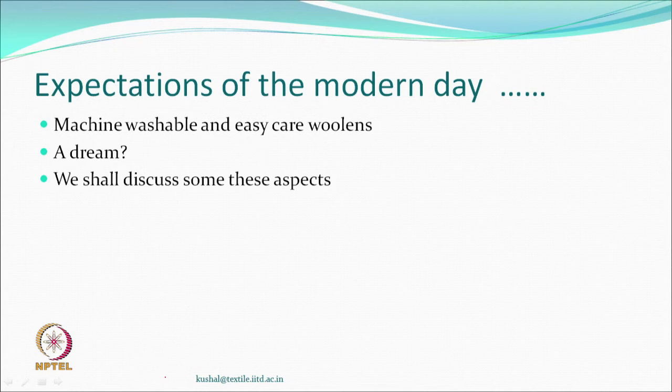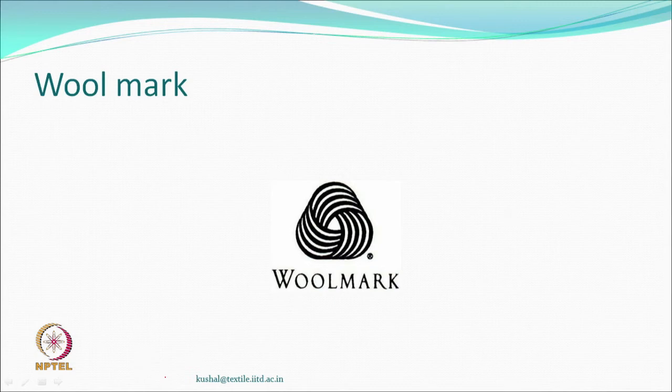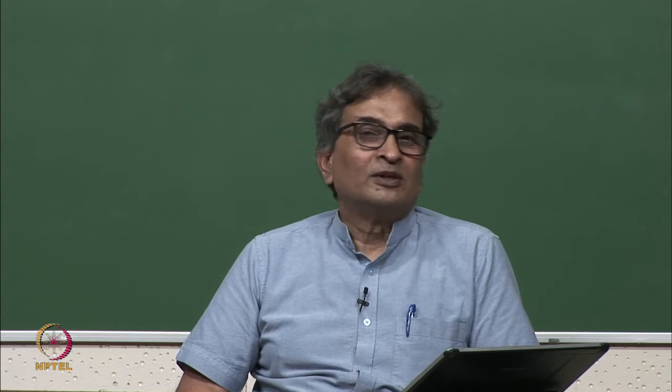One of the goals of all kinds of treatments should be: can we not make woolen garments also machine washable? That is a dream one should always have. We are talking about making wool shrink resistant. When people buy a woolen garment, they like to see a standard mark — a wool mark — which certifies it is 100% wool fabric. Fine wool is obviously costly; it has quite an aristocratic status.